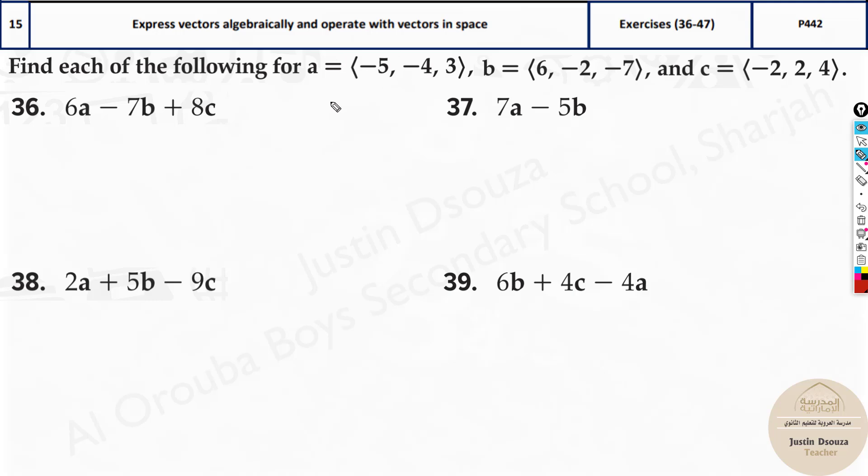Everything is multiplied by 6 here, it will be minus 30 and then we will have minus 24 and lastly there is 18, that is the first component, that is 6a.